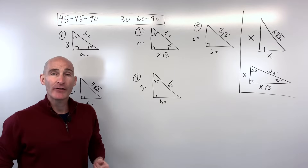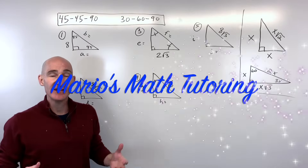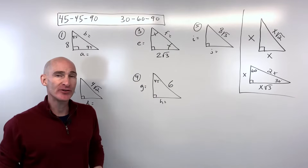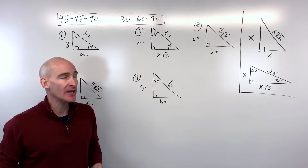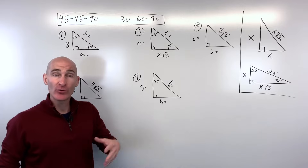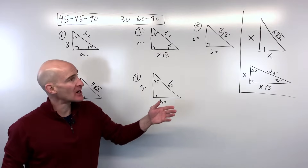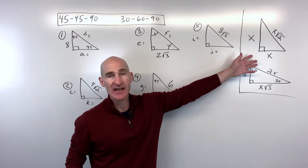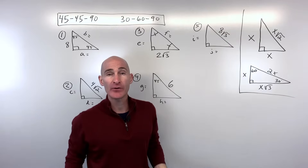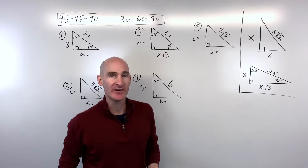In this video, we're going to talk about how to find the missing sides in the special right triangles — the 45-45-90 and the 30-60-90. We're going to go through the 45-45-90 first, then we'll do the 30-60-90. Then I want to talk a little bit about where these side lengths come from — we can get into the theory if you're interested — and then we'll do some more problems at the end.